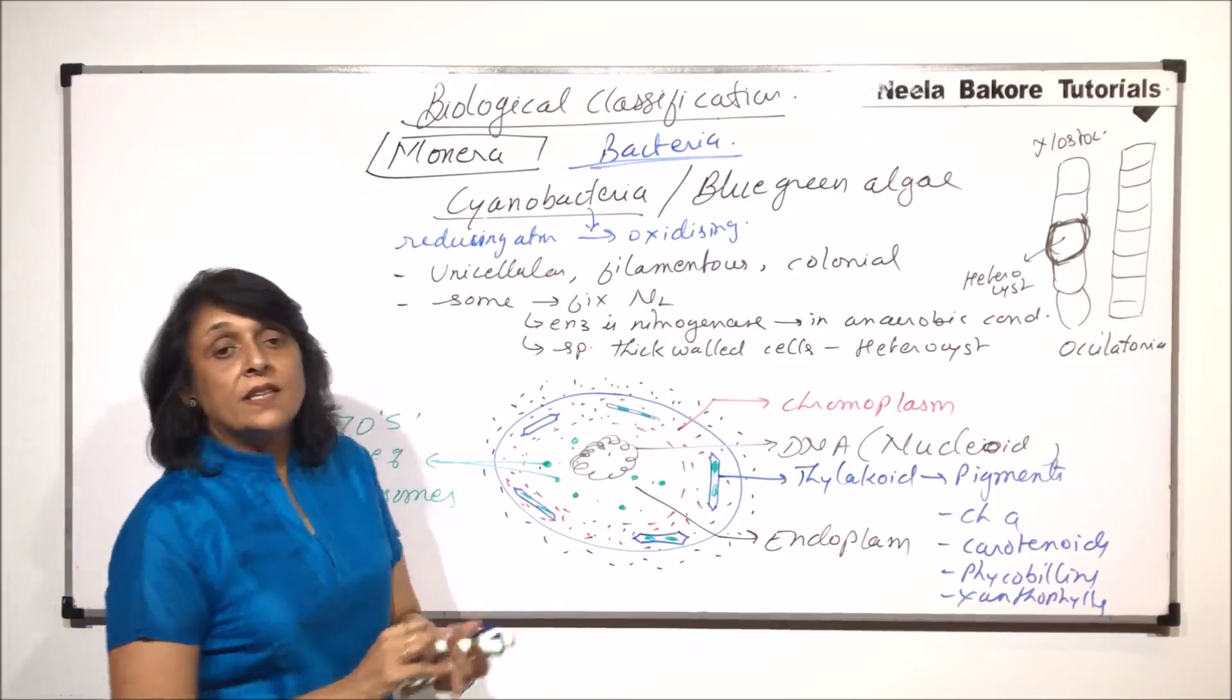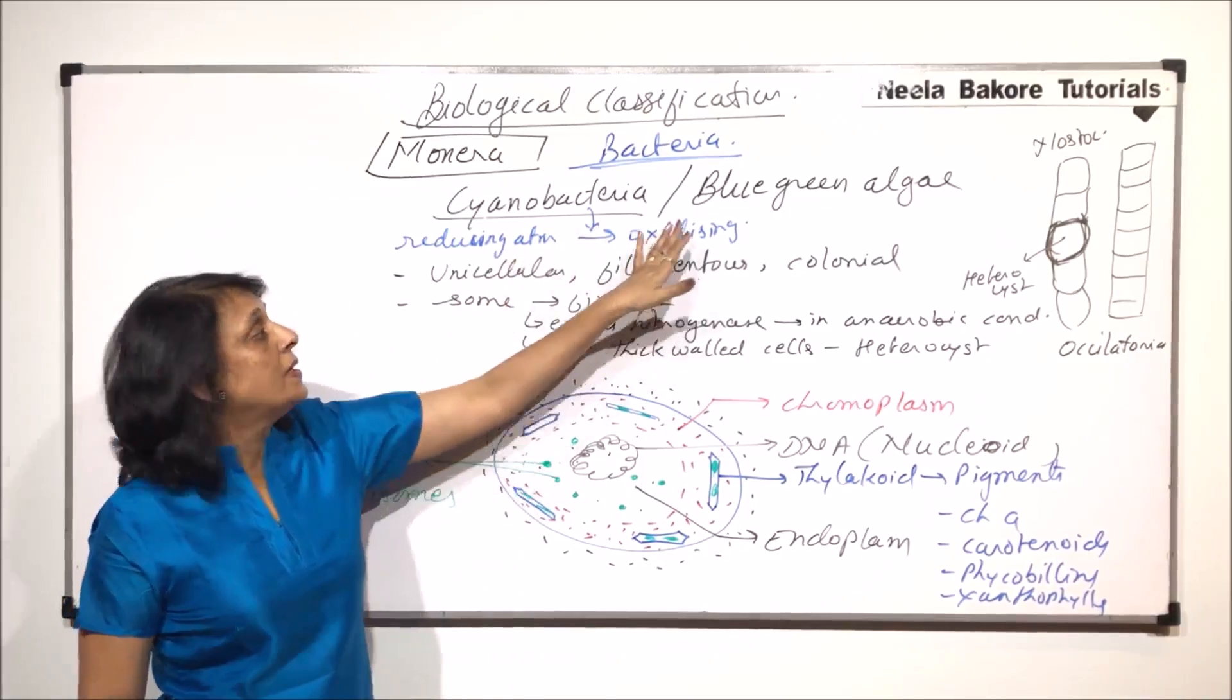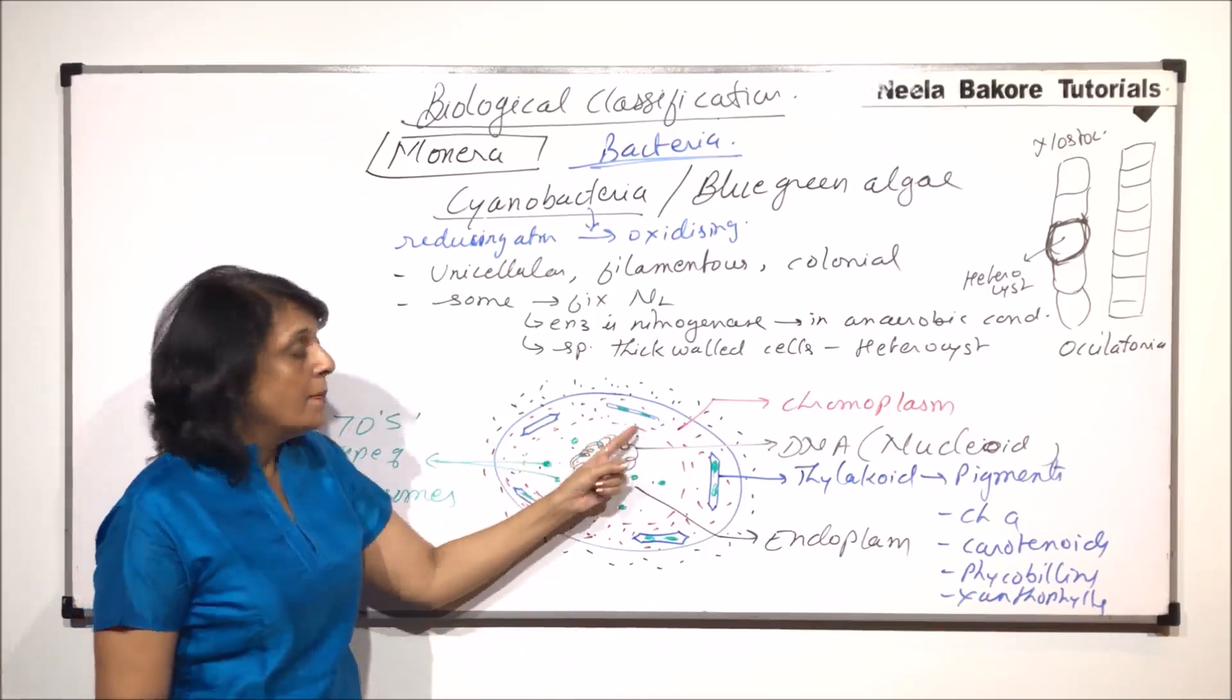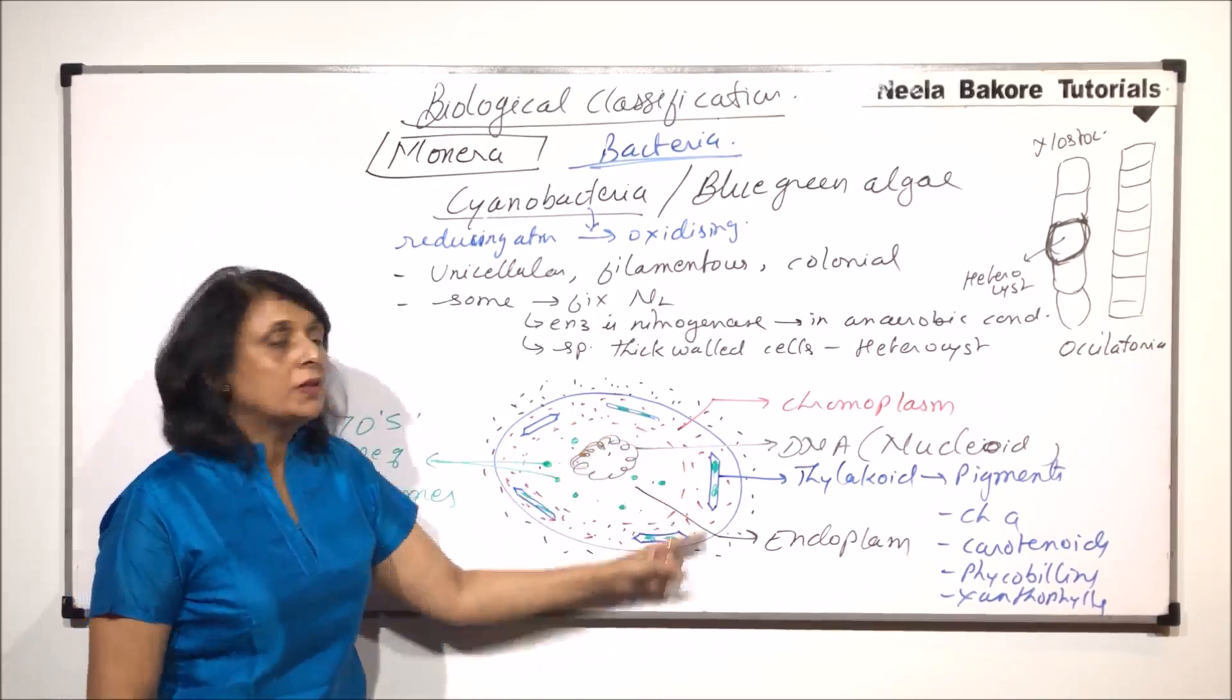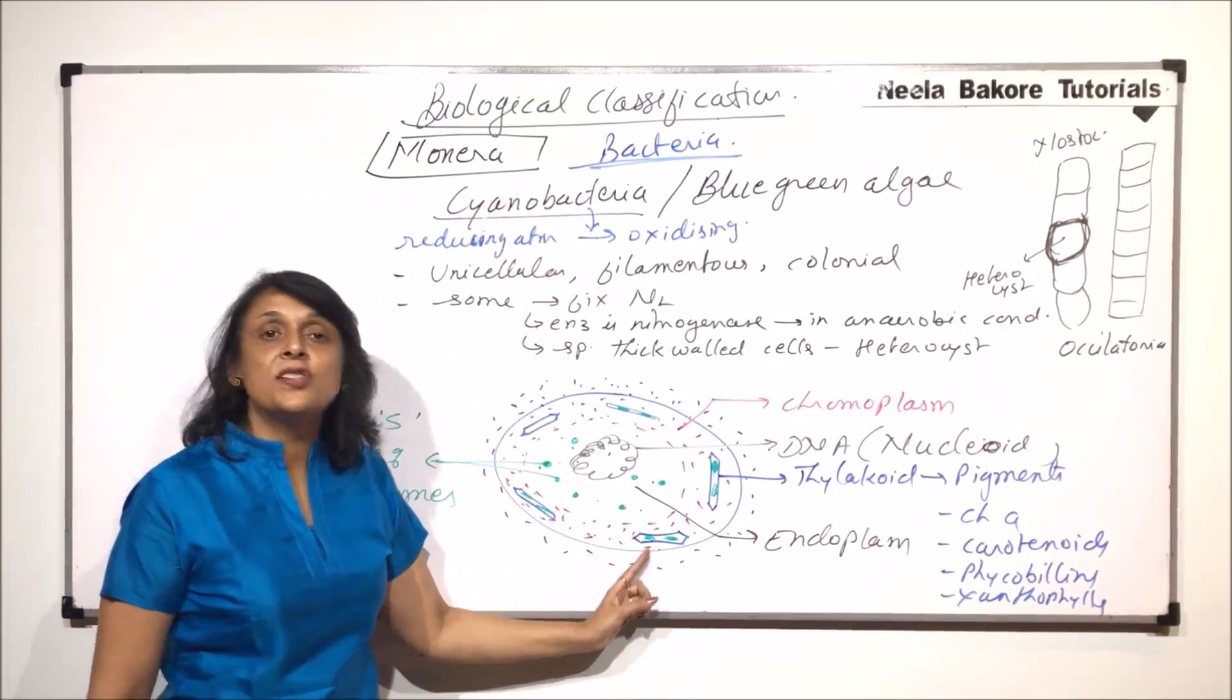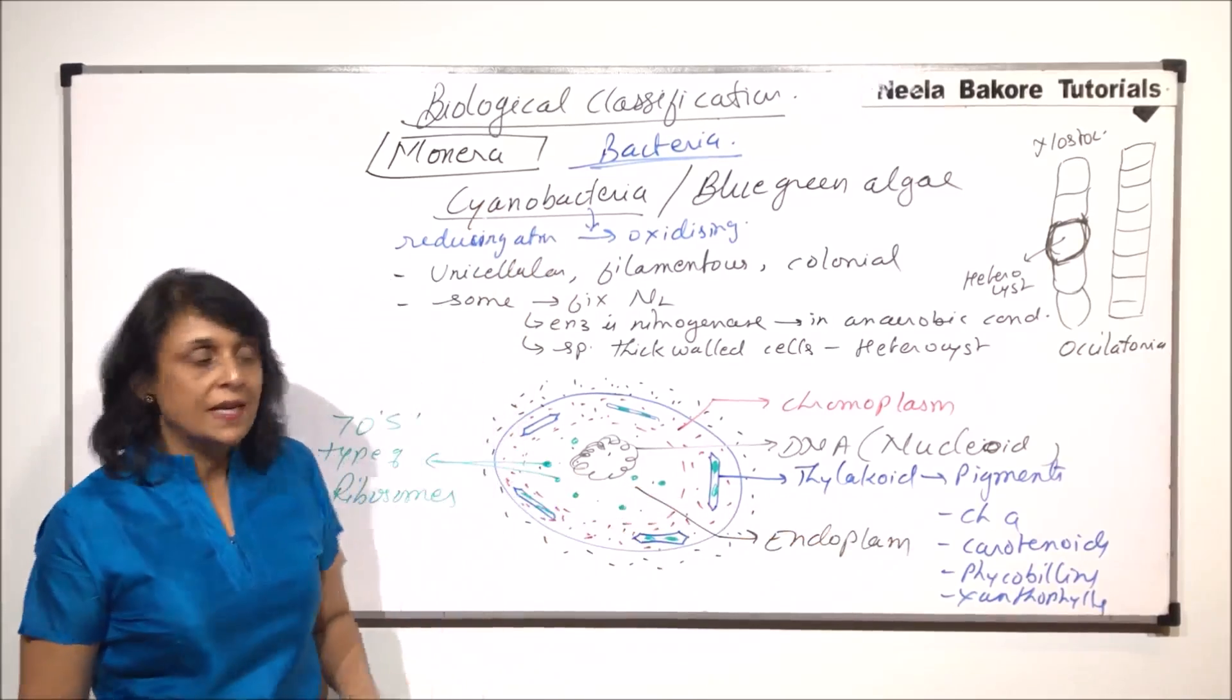This is the difference. In typical bacteria, eubacteria, there is a peptidoglycan cell wall, plasma membrane, cytoplasm is uniform, no thylakoids, no pigment. But here, in case of cyanobacteria, there is an additional thing that is the thylakoids are there and these are the pigments which are present.